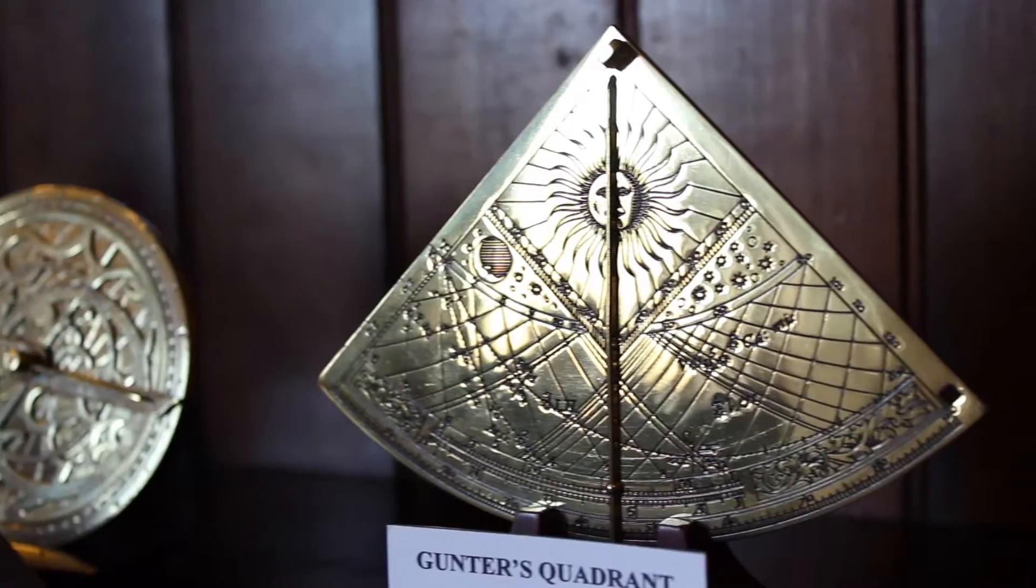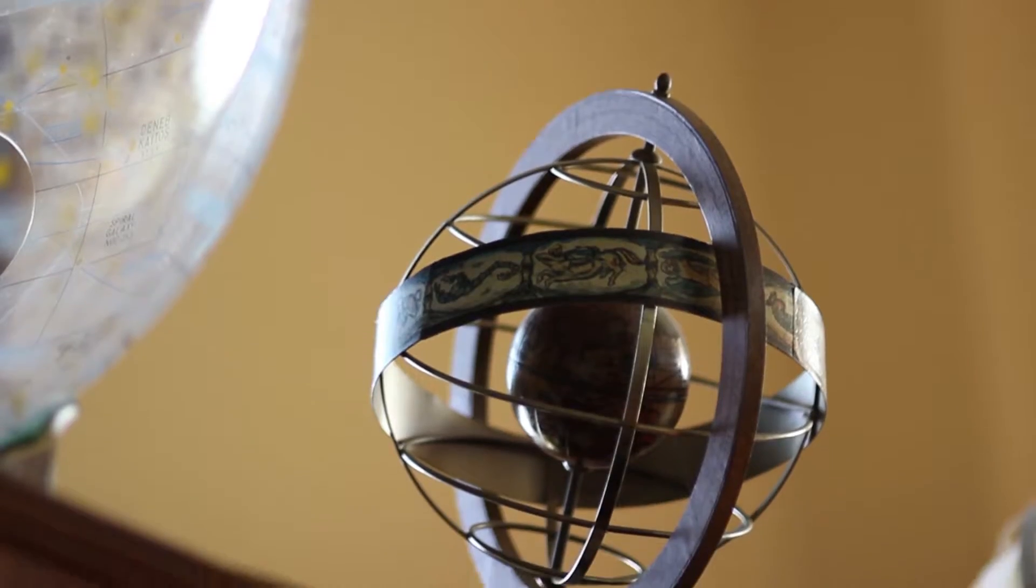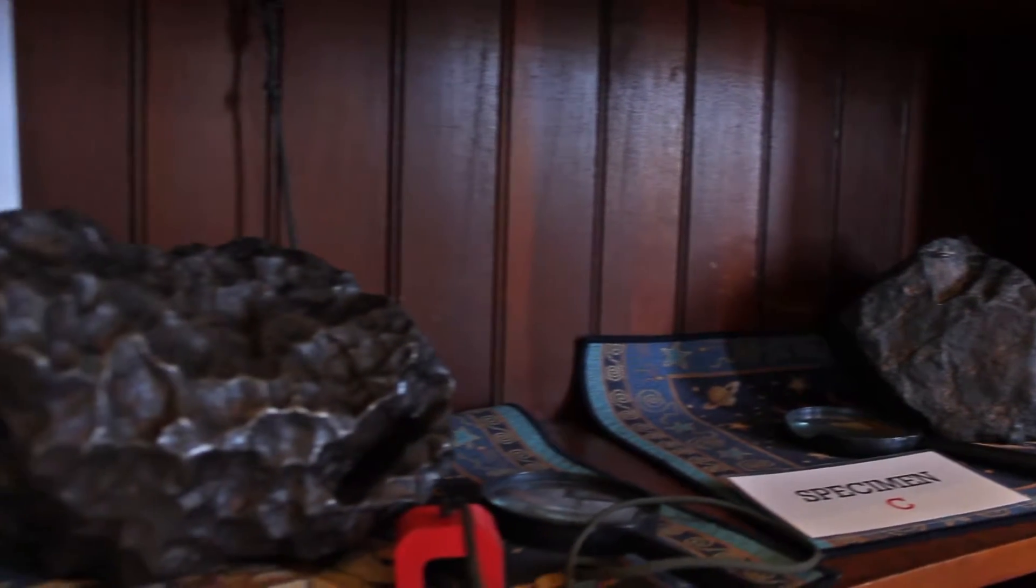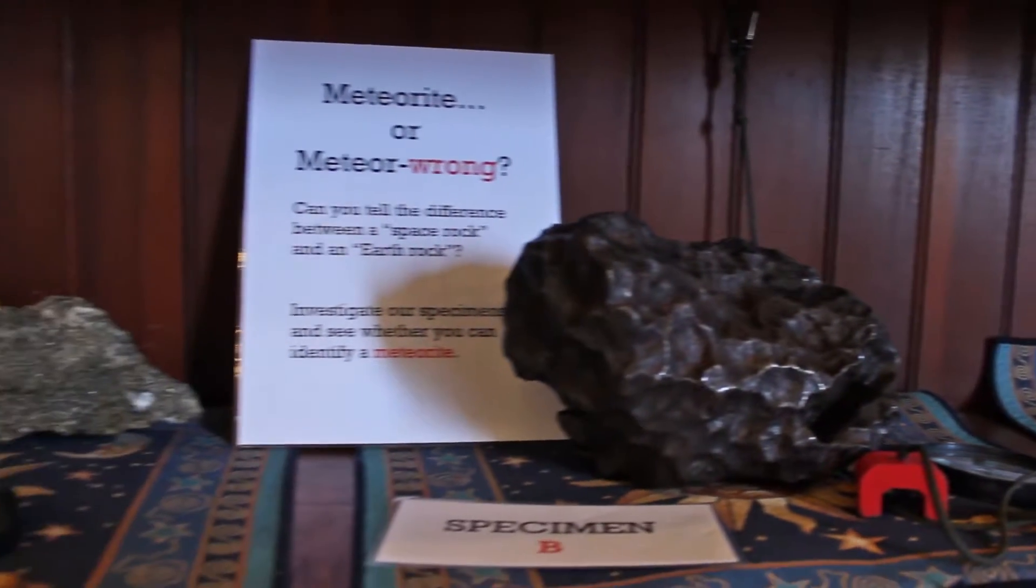We also have these great displays on the shelves. We've got scale models of the planets and a meteorite, a real rock that fell from outer space in South America.